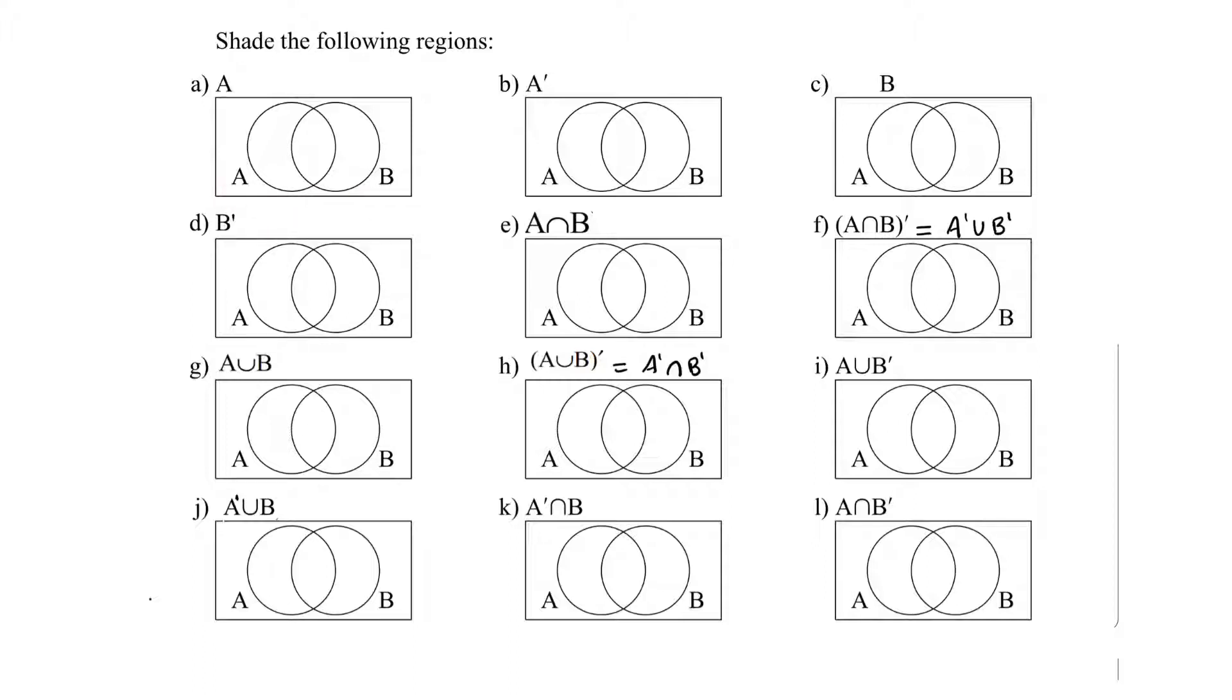In all the examples circle A represents set A and circle B represents set B. In the first question they are asking us to shade A. So this is the circle A and we will shade it. This shaded region represents elements in A.